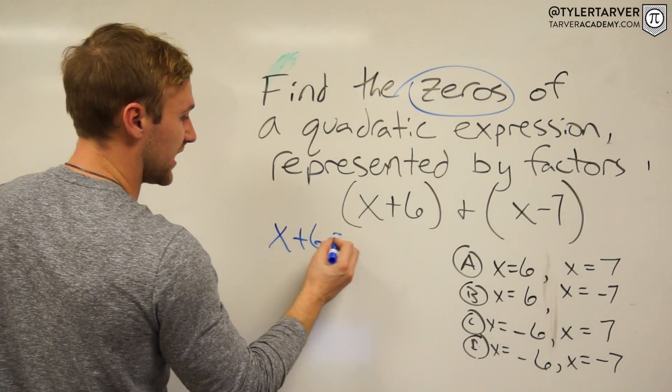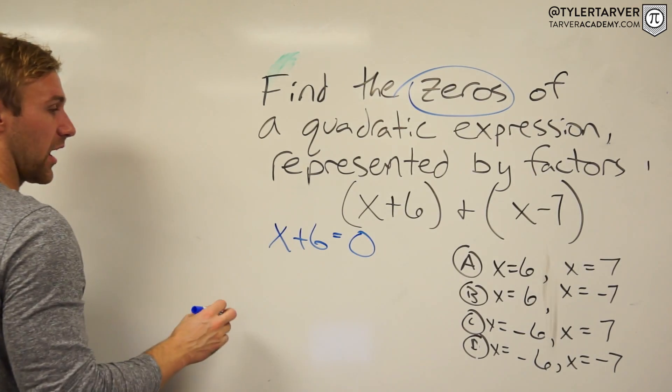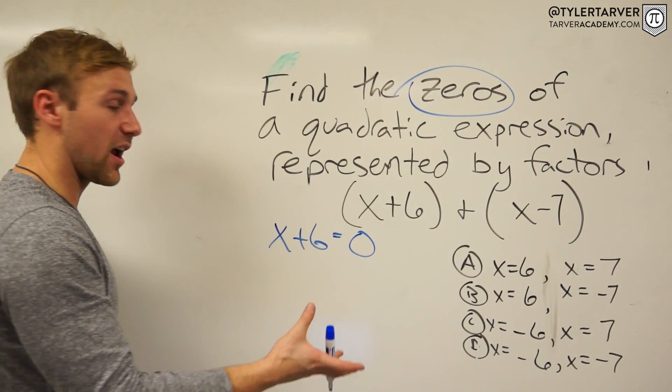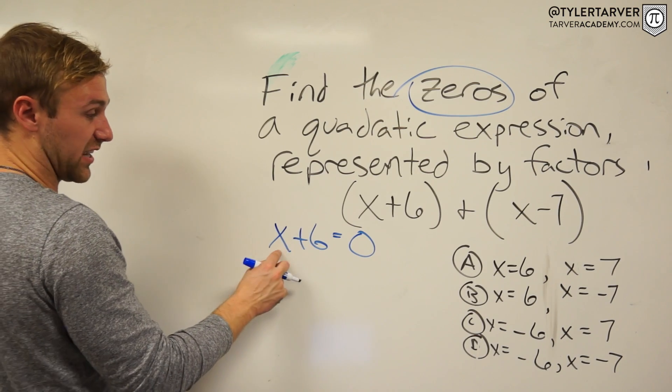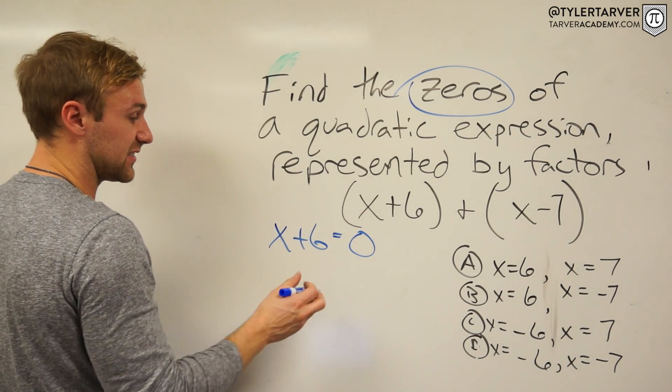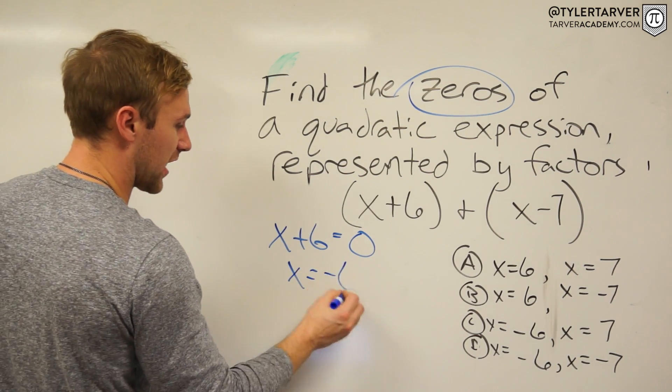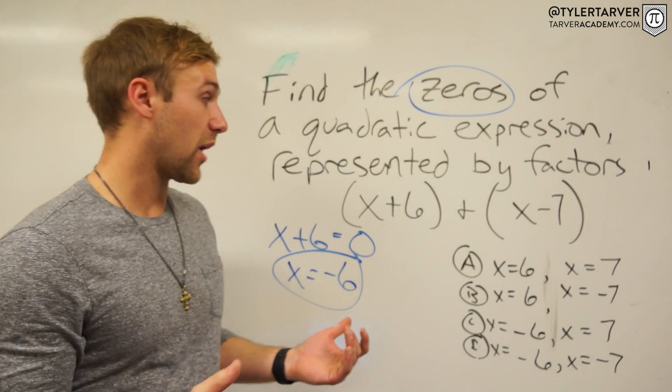What you do is you set these equal to zero. X plus six equals zero. Okay. We're making our y zero. And then we just solve for x. Okay. So to get x by itself, you do the opposite of plussing six, which means we would subtract six. And that's it. You've got one of your answers.